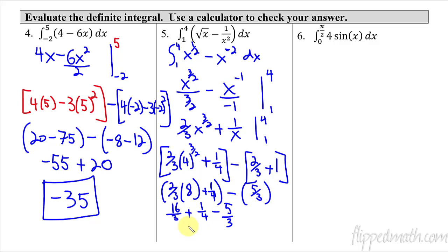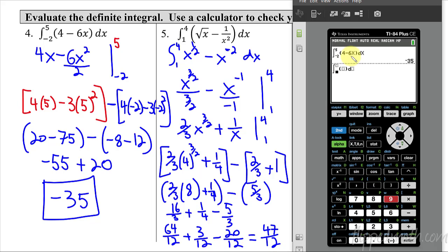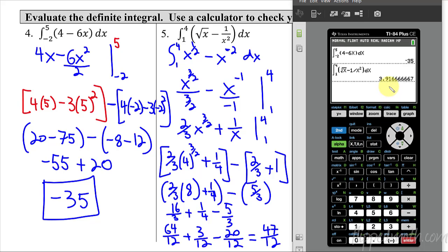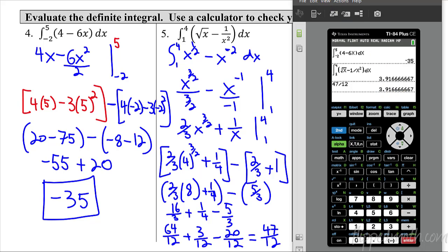Getting a common denominator of 12: 16/3 + 1/4 − 5/3 becomes 64/12 + 3/12 − 20/12, which equals 47/12. Let's check the calculator: math, 9, integral from 1 to 4 of square root of x minus 1 divided by x², with respect to x. Enter — 3.91667. Is that the same as 47/12? Let's check: 47 divided by 12 — yes, it is. Awesome.